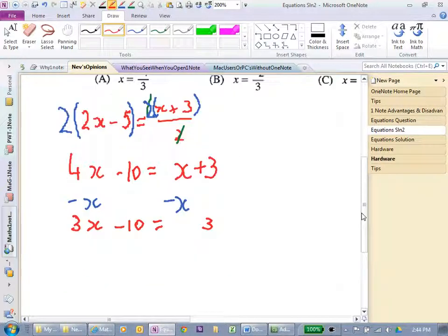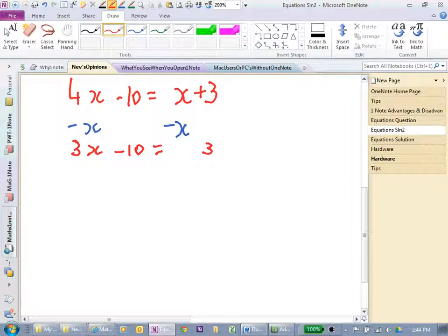Let's scroll down a minute. We have now got one more step to go. Let's add 10 to both sides. No, we've got two more steps to go, really. 3x equals 13. Last step here is to divide both sides by 3.